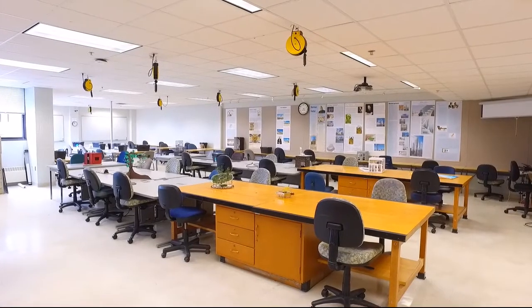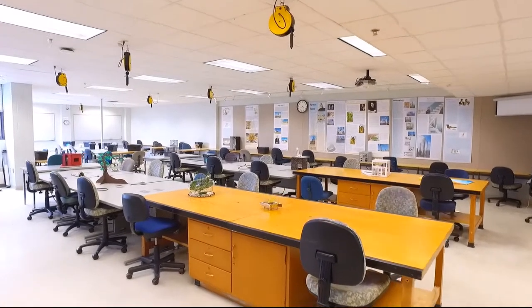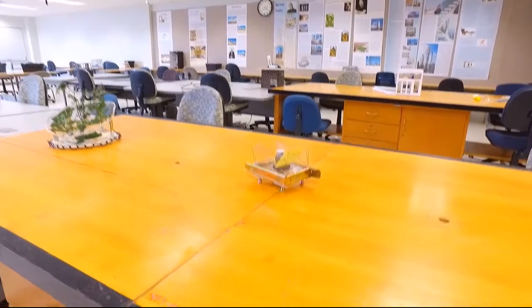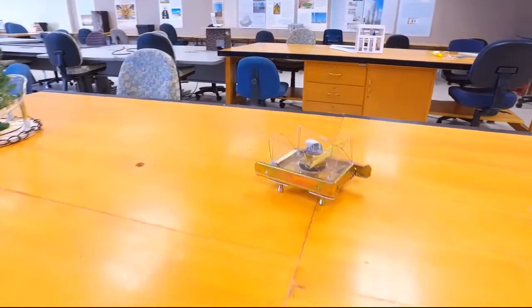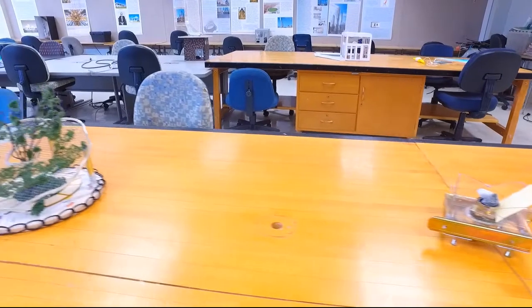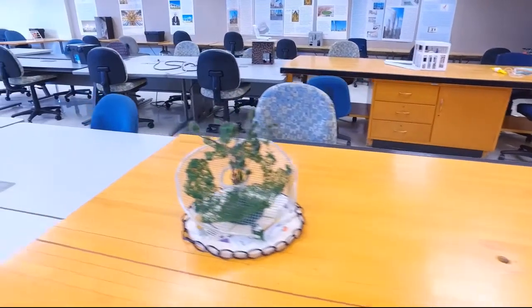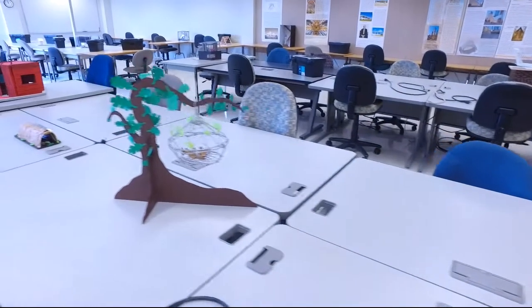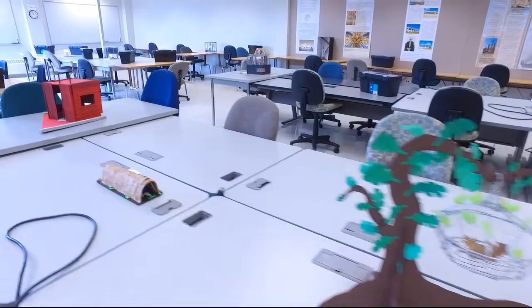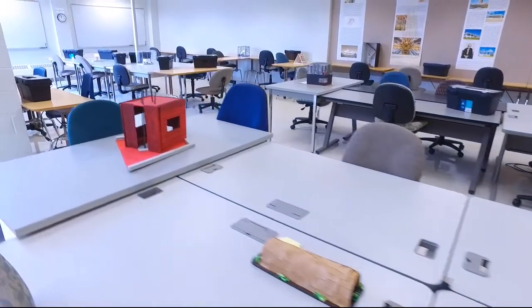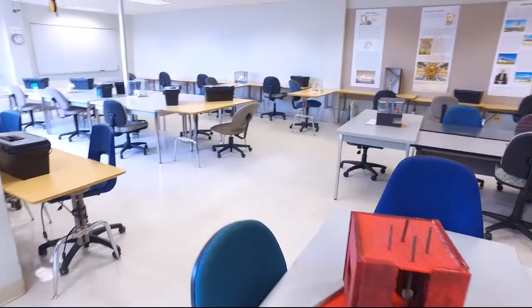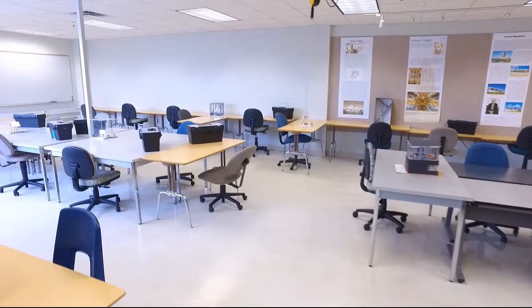First we're going to take a look at one of our lower level studios. This is room 417. Students can expect to spend most of their time during the first year in this room. This is often a shared studio with more than one class, and students are getting used to working with their hands and crafting some basic architectural skills like model making, creating three-dimensional space, and learning about what we call star architects or famous architects both of present and past.